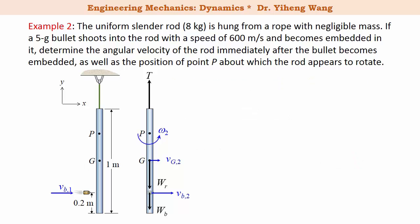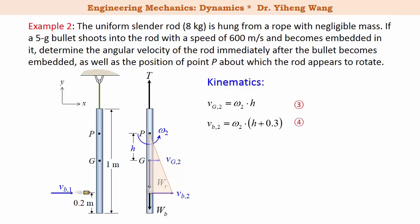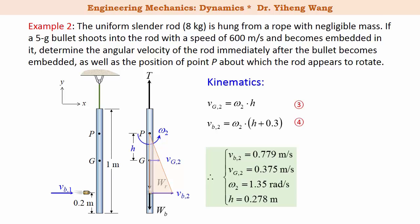Assuming point P is at a distance H from point G, point P appears to be the center of rotation — that is, the instantaneous center of zero velocity. From kinematics: Vg2 = omega2 × H, and Vb2 = omega2 × (H + 0.3 m). These are equations three and four. We now have four equations and four unknowns — Vg2, Vb2, omega2, and H — and we can solve for all of them. This completes the problem.